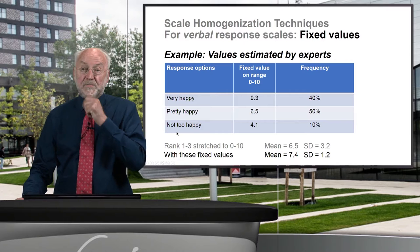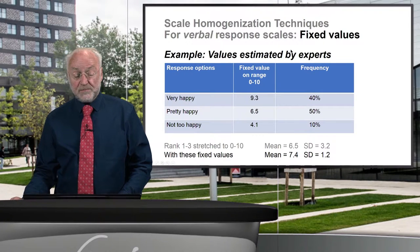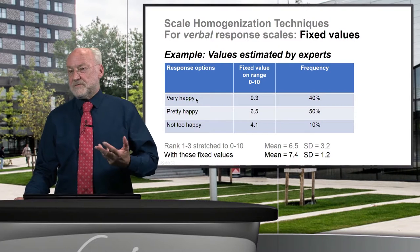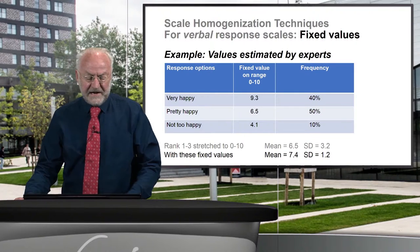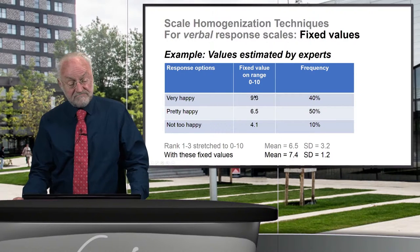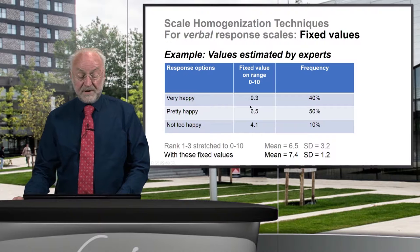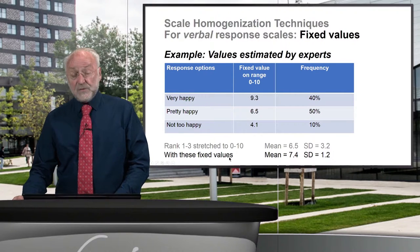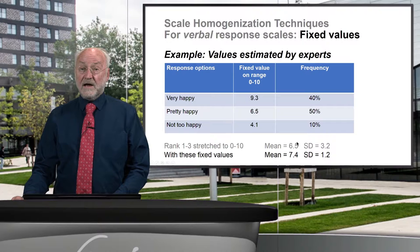A better alternative is the fixed values approach, where you ask experts to estimate what "very happy" actually is on a scale from 0 to 10. We did that in our team and found that very happy equals about 9.3, pretty happy about 6.5, and not too happy about 4.1. If you compute a mean and standard deviation using these fixed values, you see a difference from the stretch method shown earlier.